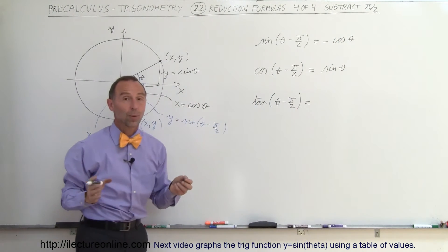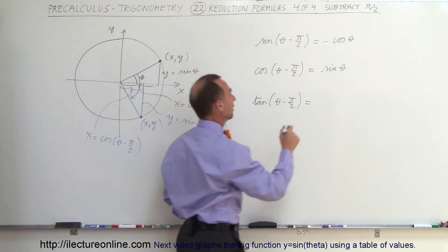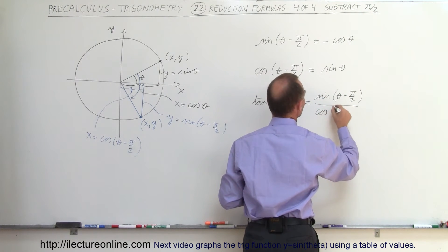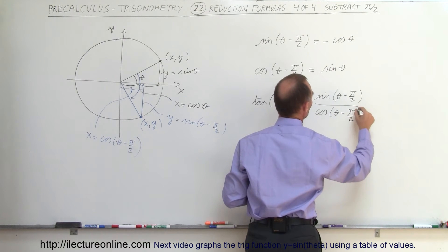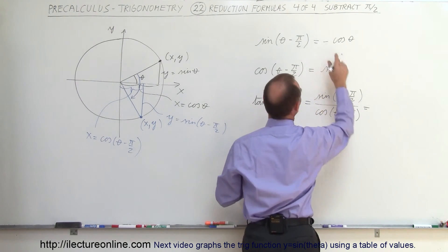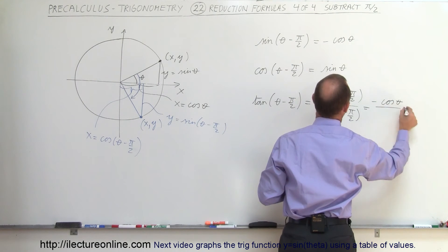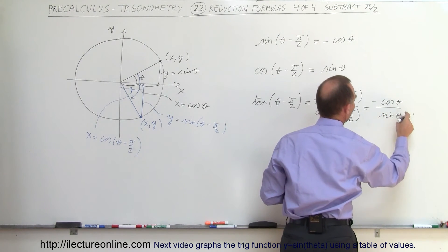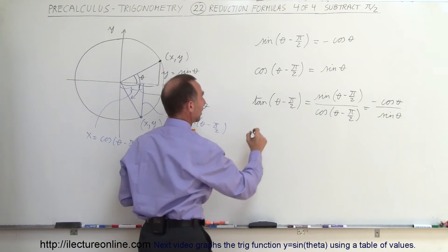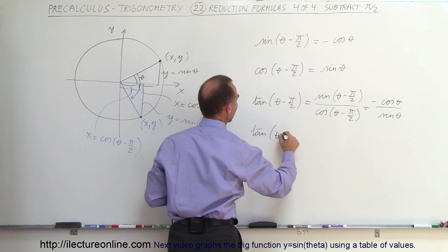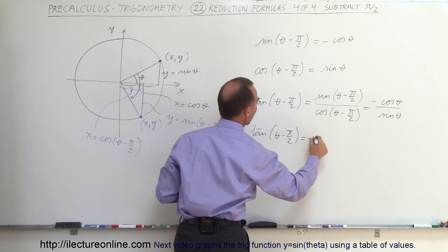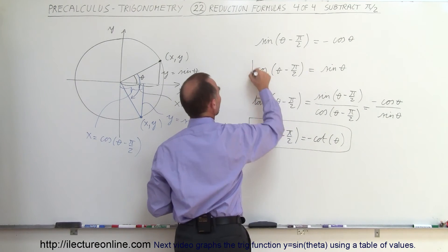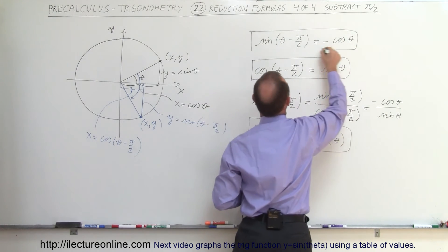Finally, for the tangent, knowing that tangent equals sine divided by cosine, we write: tangent of theta minus π/2 equals sine of (theta minus π/2) divided by cosine of (theta minus π/2). The sine of that is negative cosine of theta, and the cosine of that is sine of theta, so cosine divided by sine is cotangent — with the negative sign remaining. Therefore, the tangent of theta minus π/2 equals negative cotangent of theta. Those are our three reduction formulas when we subtract π/2 from the angle.